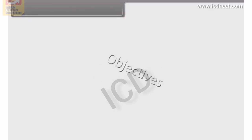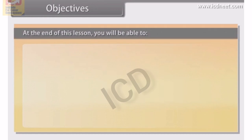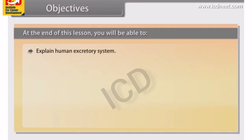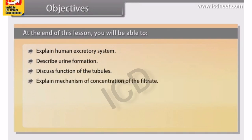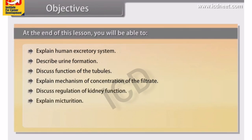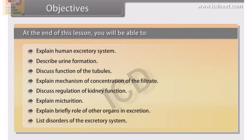At the end of this lesson, you will be able to: explain the human excretory system; describe urine formation; discuss functions of the tubules; explain the mechanism of concentration of the filtrate; discuss regulation of kidney function; explain micturition; explain briefly the role of other organs in excretion; and list disorders of the excretory system.